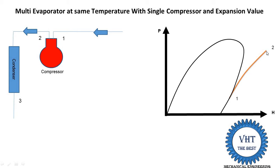From point number 2, we draw point 3. Since it is constant pressure, it is a horizontal line — drawn to the left side — and point 3 comes on the liquid line. So from point 2 we draw a horizontal line to point 3. The mass in the condenser is m, the total mass of refrigerant circulated through the compressor and condenser.